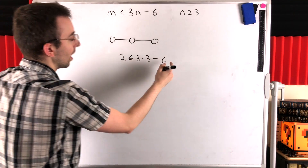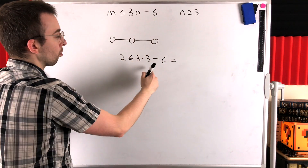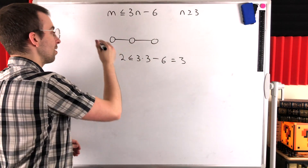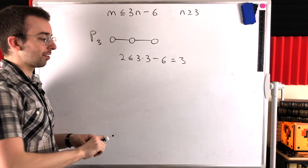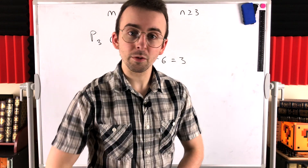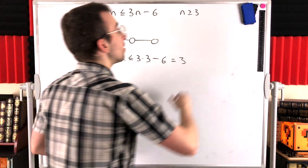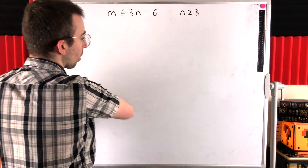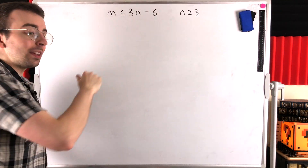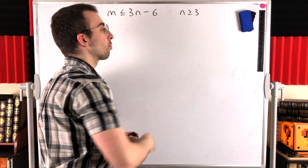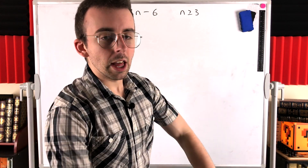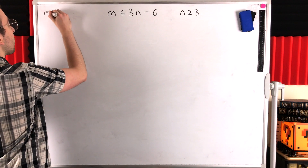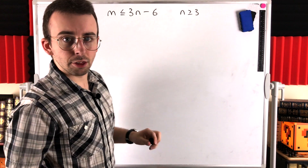...and indeed two is less than or equal to three times three minus six, because three times three minus six equals three. So the result holds for this graph — the path graph on three vertices — and we can ignore it going forward. That means the graphs we'll be considering all have size at least three, since that was the only connected plane graph with at least three vertices and fewer than three edges. Going forward, we can assume the size of our graphs is at least three.